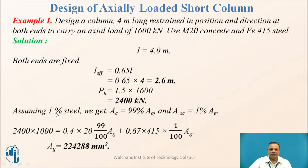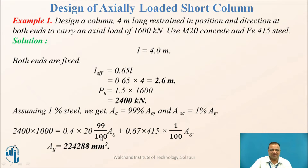We assume steel at 1% — the minimum required is 0.8%. Assuming 1% steel, the area of concrete is 99% of gross area and area of steel is 1% of gross area. Substituting into the formula: Pu = 0.4·fck·Ac + 0.67·fy·Asc, with 2400 × 10³ N and fck = 20 N/mm².